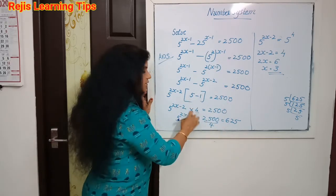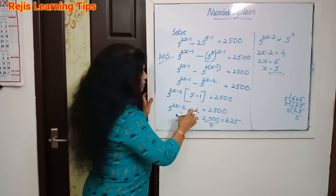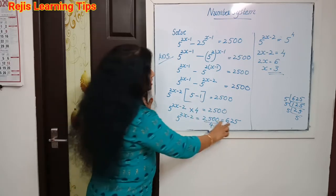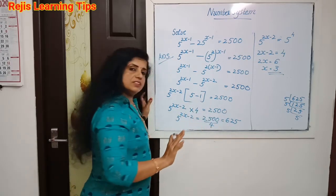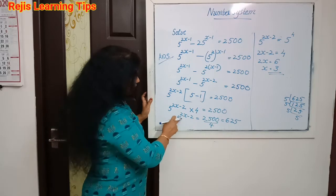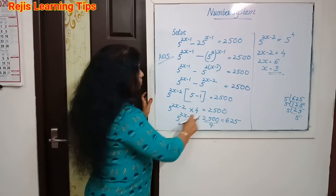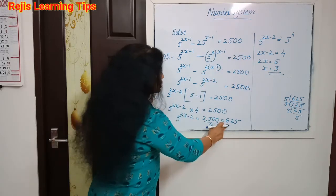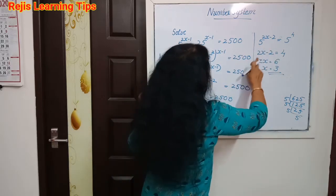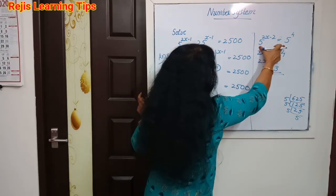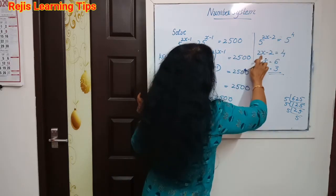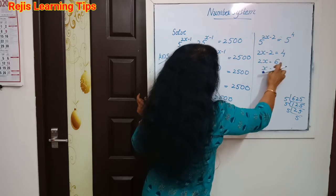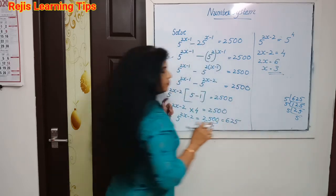5 minus 1 means that is 4. Then 625 is equal to 625 means 5 raise to 4. The base is the same and the exponent is also the same, so 2x minus 2 is equal to 4, then 2x is equal to 6, x is equal to 3.